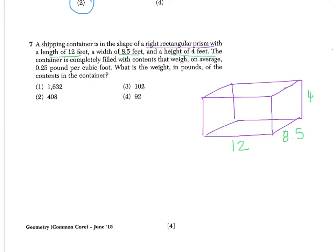The container is completely filled with contents that weigh, on average, 0.25 pounds per cubic foot. What is the weight in pounds of the contents in the container? So what we first need to find is the volume, because it says completely filled, meaning calculate the volume, we're filling this up. So volume of a rectangular prism is length times width times height. So I'm just going to plug in, because I know the length is 12, the width is 8.5, and the height is 4. So multiplying each of those, when I type them into my calculator, gives me 408.